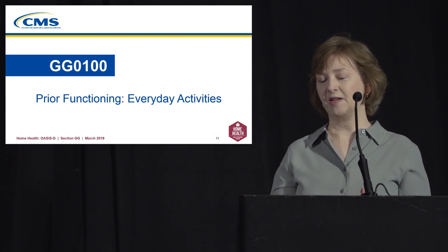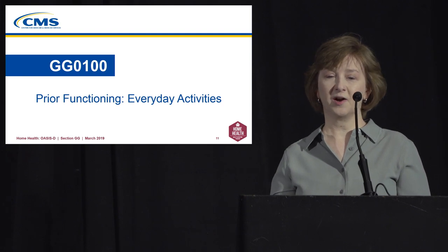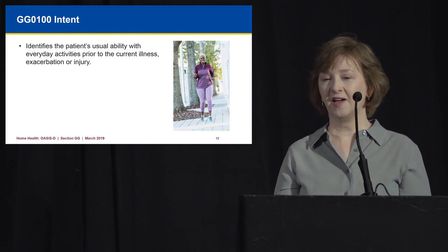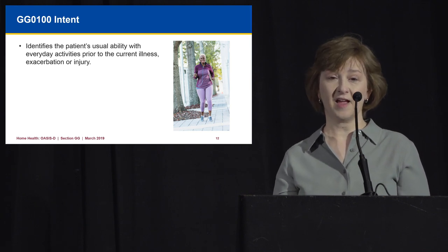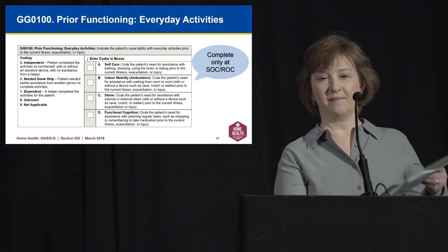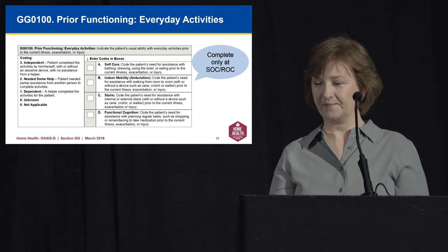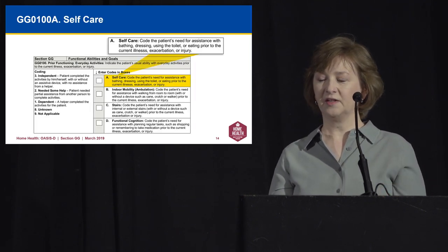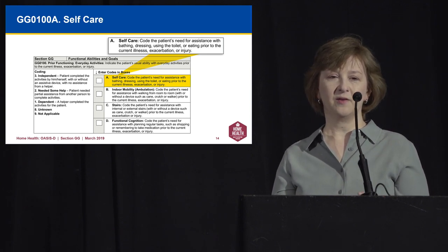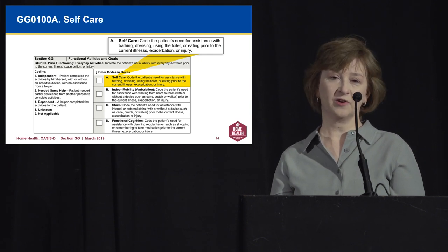Several questions early in the data set are only collected at start of care or resumption of care and relate to prior functioning. The first item is GG0110, Prior Functioning Everyday Activities. The intent is to identify patients' usual activities prior to their current illness, exacerbation, or injury. The first sub-item asks about self-care — did the person need assistance with bathing, dressing, using the toilet, or eating prior to the current illness? Then indoor mobility — the patient's need for assistance walking from room to room, with or without an assistive device.